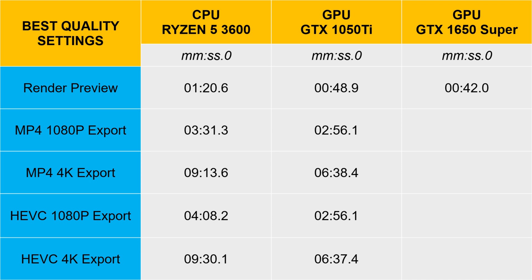Onto the exporting part of the test. MP4 1080p we've got a time of 2 minutes 56 to beat, and there it is — 51.7 seconds. I was really hoping to see a big improvement and I'm really excited to see the rest of the results. MP4 4K export: 6 minutes 38 down to 1 minute 27 seconds. That really is a stonking result.